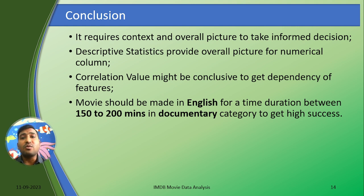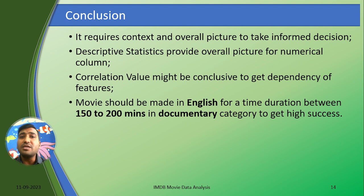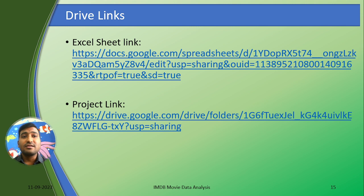Coming to the conclusion, it requires context and an overall picture to take informed decisions. Descriptive statistics provides an overall picture of numerical columns. Movies should be produced in English, with a duration between 150 minutes to 200 minutes, and in the documentary category. I have provided the Google Drive link for the project and this presentation.